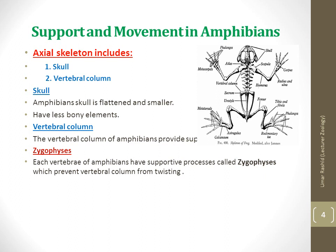Now we will discuss support and movement in amphibians, covering the axial skeleton and appendicular skeleton in detail. The axial skeleton consists of the bones of the head and trunk of a vertebrate, including the skull and vertebral column. Amphibians, like other vertebrates, have a well-developed endoskeleton of bone and cartilage to support the body and its muscular movements.